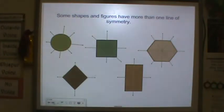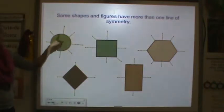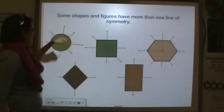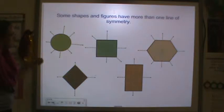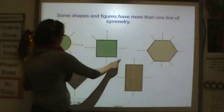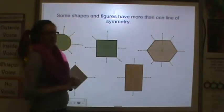Here are some shapes that have more than one line of symmetry. A circle has an infinite number of lines of symmetry. You can cut it in half over and over again, and it will keep having symmetry.